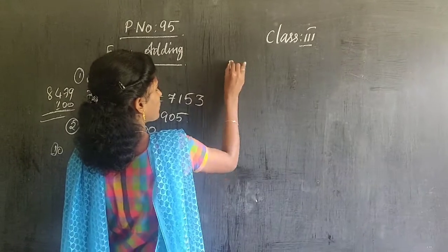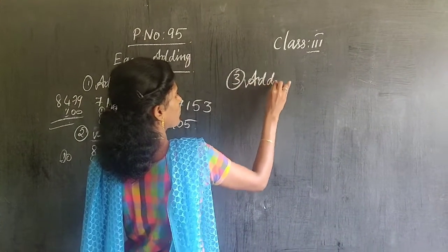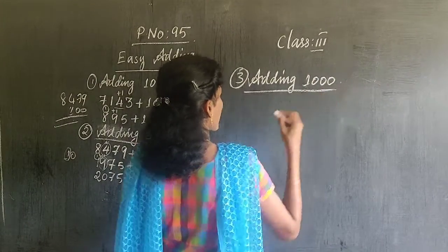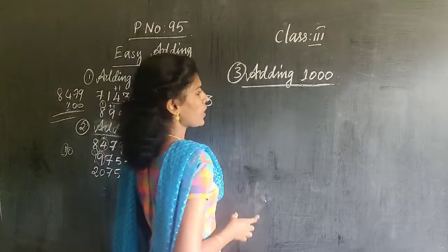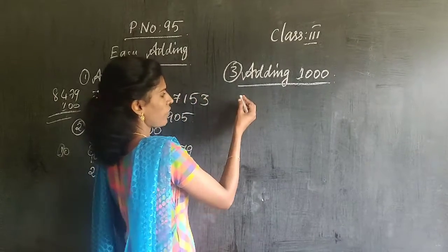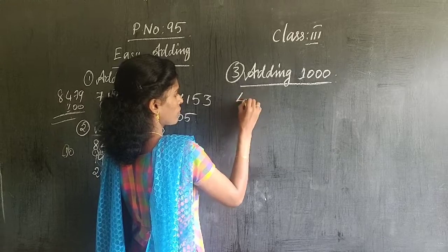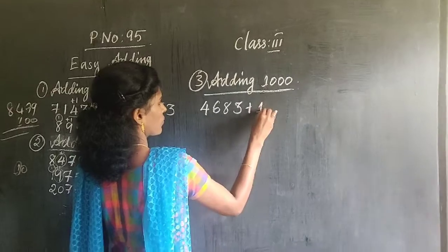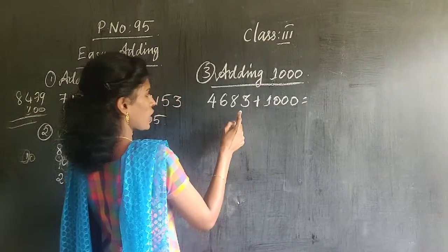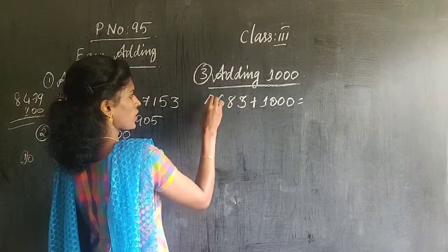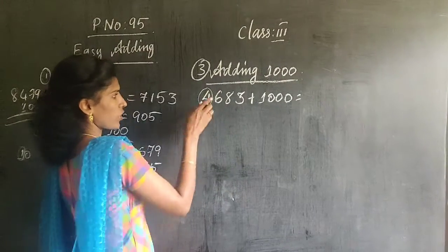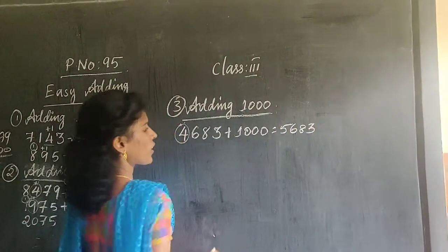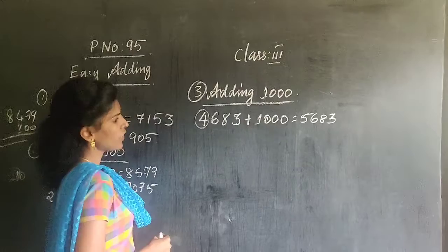Next, adding 1000. Adding 1000 means the number in the thousands place will increase by 1. Let me give an example. Here the thousands place — identifying the digits as 1, 10, 100, 1000 — the thousands digit is 4. So 4 must increase by 1: 4 plus 1 is 5, and all other digits remain as they are. So the answer is 5683.